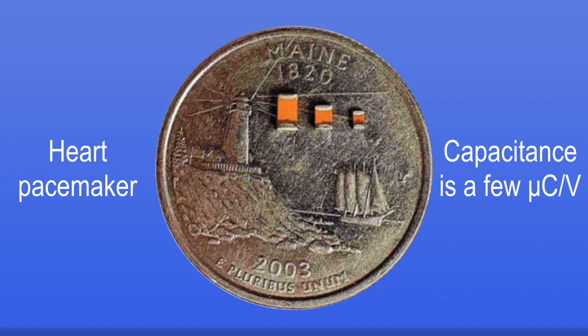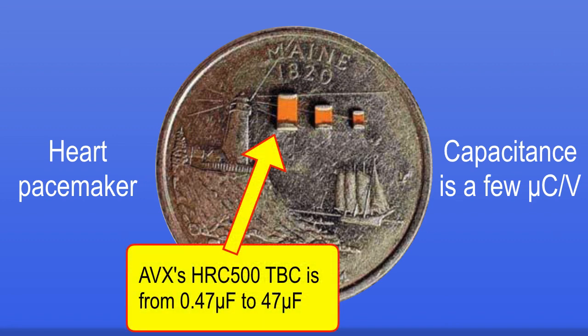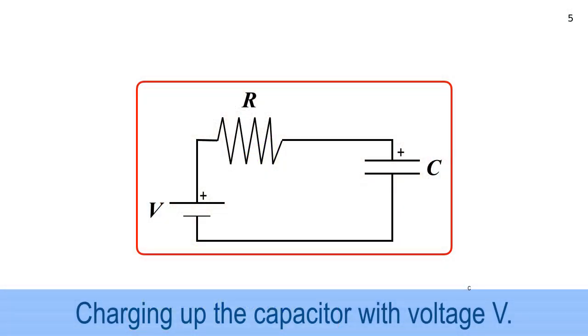The capacitance, I looked up a few pacemakers, and yeah, they have a capacitance of a few micro coulombs per volt. Remember, a coulomb per volt is the unit of capacitance. It's also known as the farad, after Michael Faraday. And a capacitor that has a capacitance of one farad is ginormous. So a microfarad is much more human scale. Anyway, here's a picture. See those kind of orangey-brown things right up here? Yeah, those are capacitors from the AVX company.